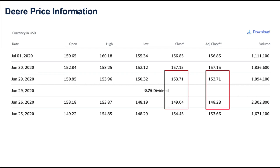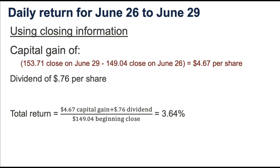On June 26, the close is 149.04, the adjusted close is 148.28, and that can be used to calculate historical returns. When we use that adjusted close series, we will get the dividend return and the capital gain return. Here's an example: we're going to use that data to calculate a daily return using the closing information. Between June 26 and June 29, the capital gain is $4.67 per share — that's just the difference in the closing price. Then we add the dividend of 76 cents per share, divide by the adjusted close on June 26, and you get a 3.64% return.